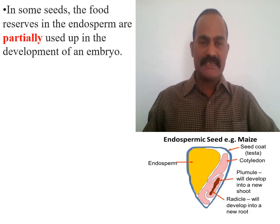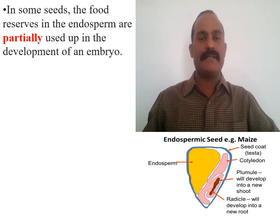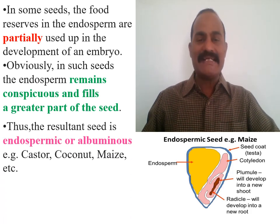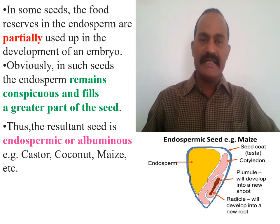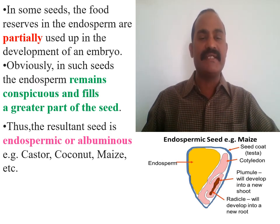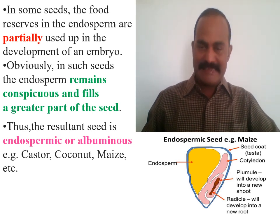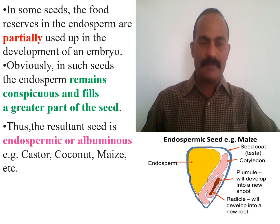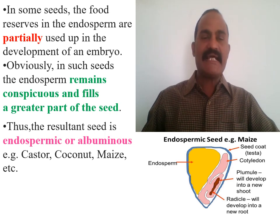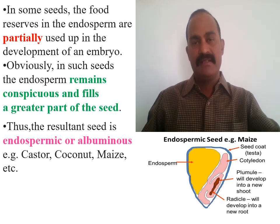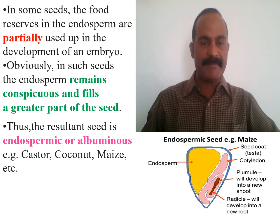In some genera, the food reserves in the endosperm are partially used up during the development of the embryo. In such seeds, the endosperm remains conspicuous and fills a greater part of the seed. The mature seed will contain a little or more amount of endosperm at maturity, and these seeds are said to be endospermic or albuminous seeds. They are called albuminous because many times the endosperm contains albumin protein. Common examples are castor, coconut, and maize — plants where endosperm persists in the mature seed.